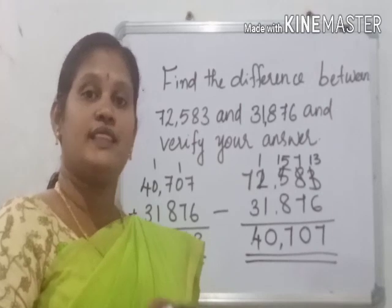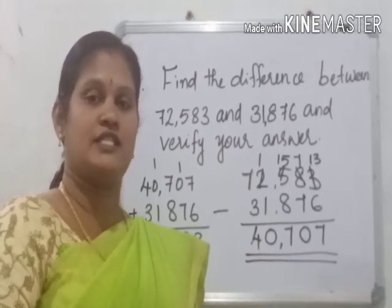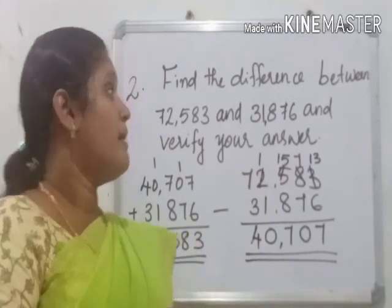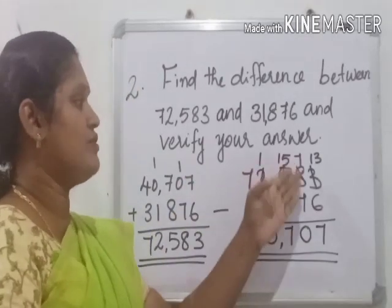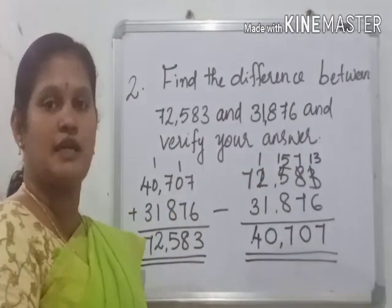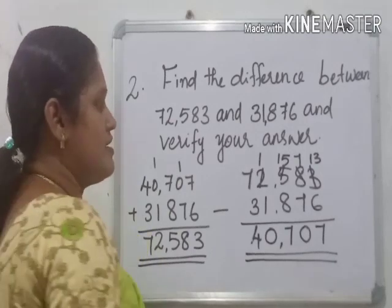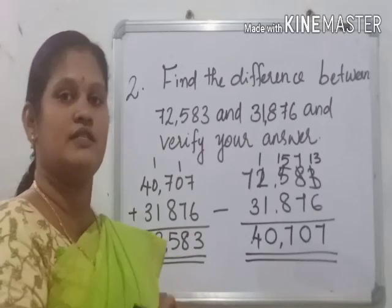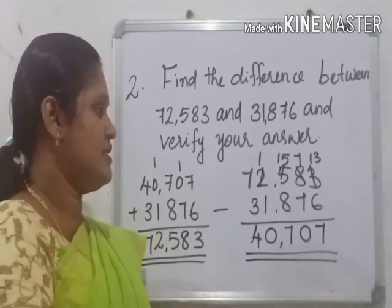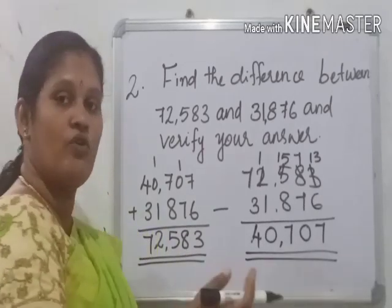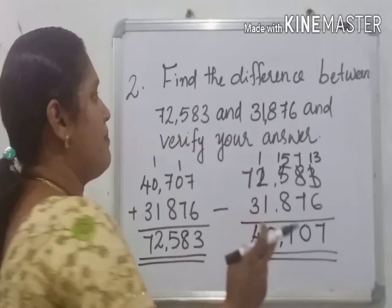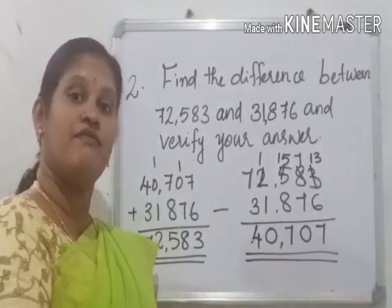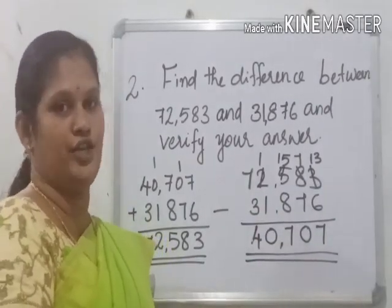So that type of subtraction is called subtraction without regrouping. But in some cases, some values we cannot subtract because they are smaller. So we borrow one from the next place. This type of subtraction is called subtraction with regrouping.